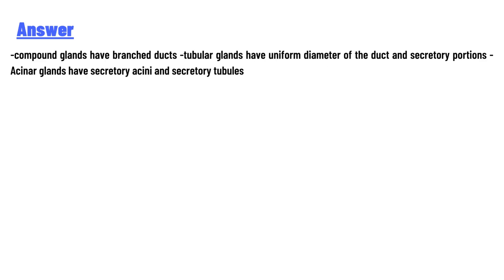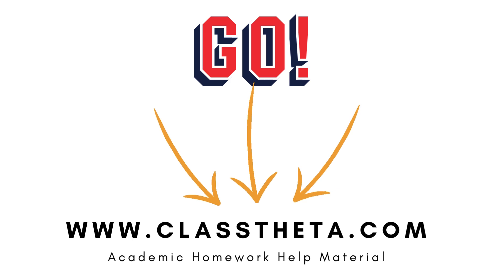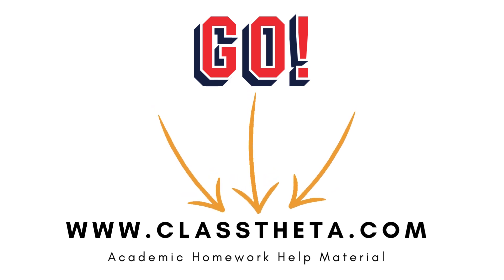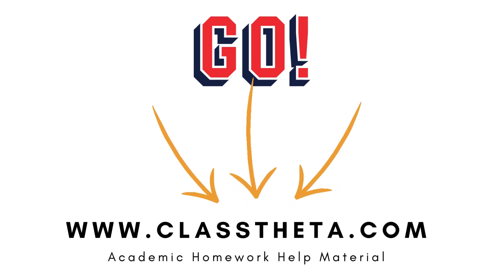The answer is: compound glands have branched tubular glands have a uniform diameter of the duct and secretory portion, and acinar glands have secretory acini and secretory tubules. Thank you for watching the video. If you have any question related to this video, please post a comment below.